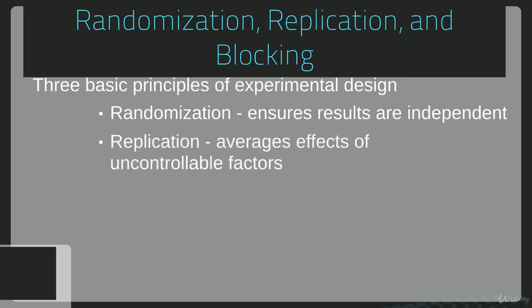Another thing is replication, which is going to average the effects of uncontrollable factors. So what we want to do is reproduce this several times so that we can show it was not simply due to chance that we got the output that we did.